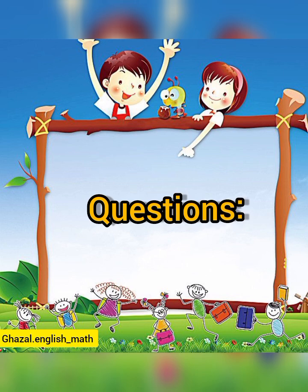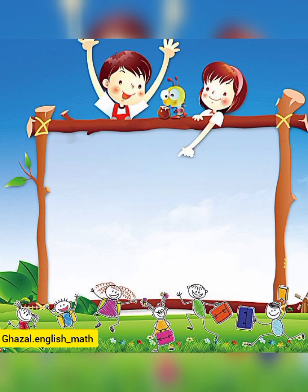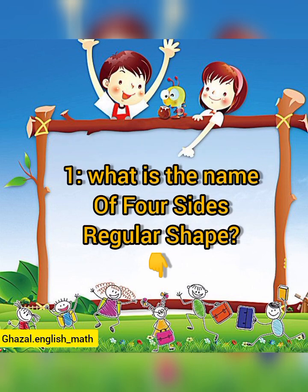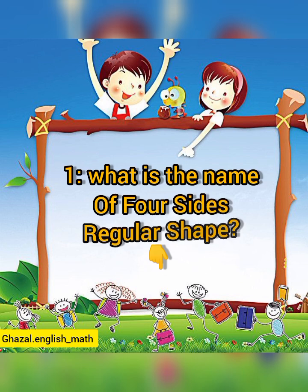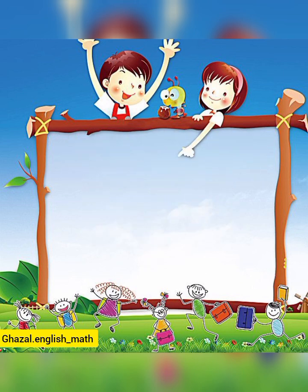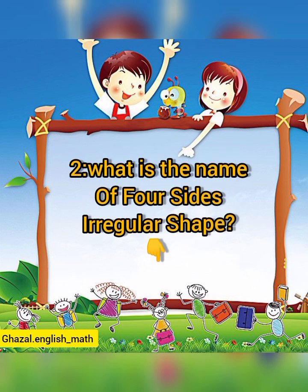Now let's answer some questions. Question number one: what is the name of a four-sided regular shape? Please write it down. Question number two: what is the name of a four-sided irregular shape? Please write it down.